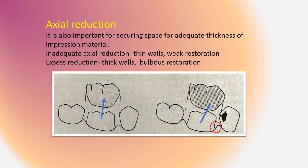Coming to axial reduction — this is also important for securing space for adequate thickness of the restorative material. In case there is inadequate axial reduction, we have thin walls and a weak restoration. Excess reduction leads to thick walls and a bulbous restoration. Uneven reduction should be avoided, and roughly around 1 mm of reduction is required.